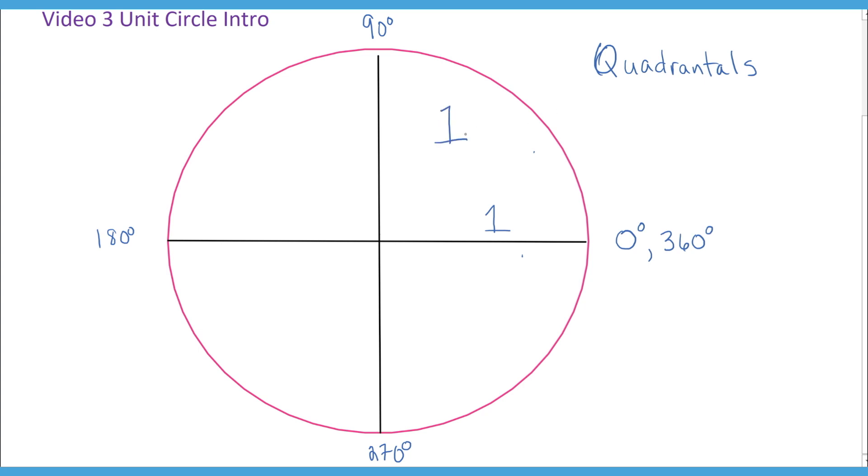So this is quadrant one, and this is quadrant two, and this is quadrant three, and this is quadrant four, just like in the Cartesian plane.